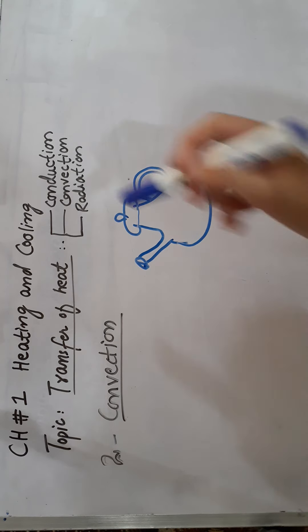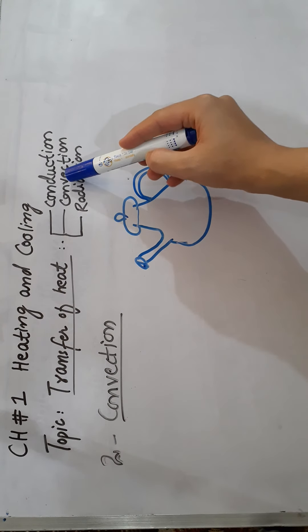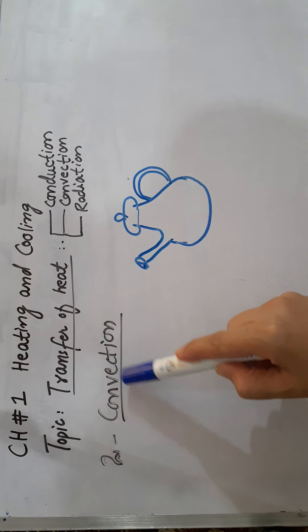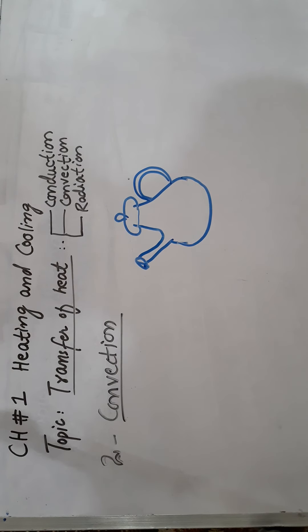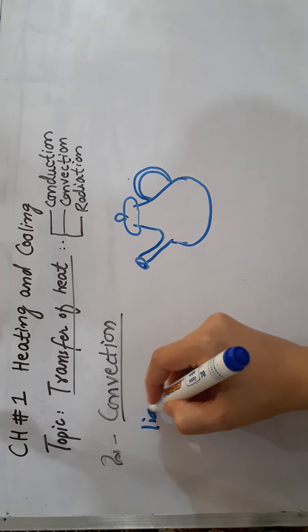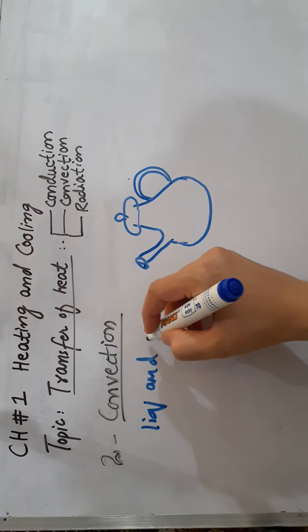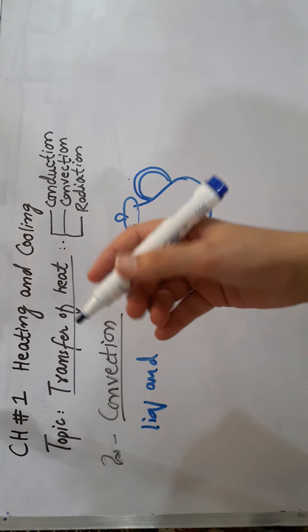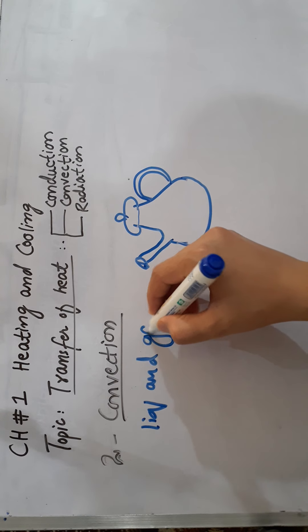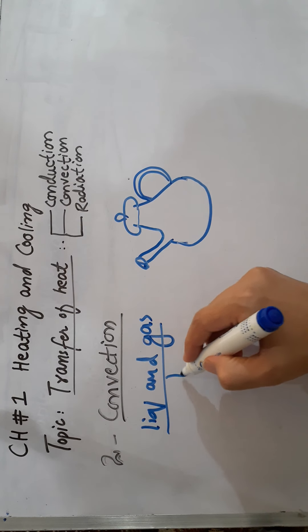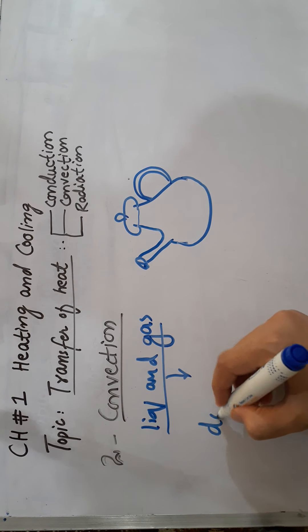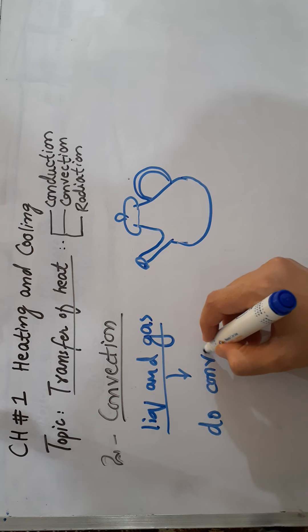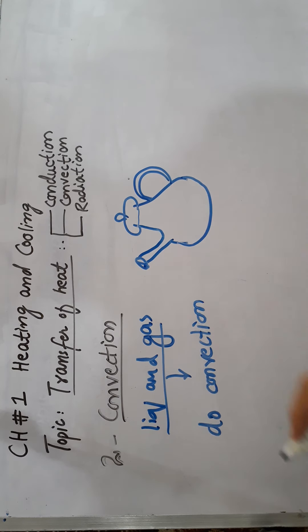After conduction, we are moving towards the second mode of transfer of heat that is convection. What happens in a convection? As we know, liquid and gases do not conduct heat. They are bad conductors. So gases and liquids do convection. What is convection?